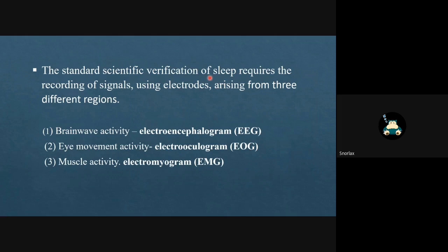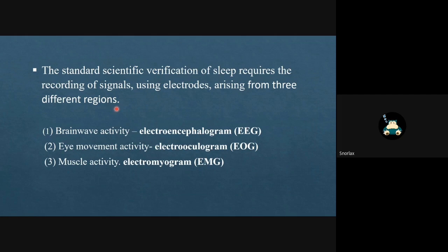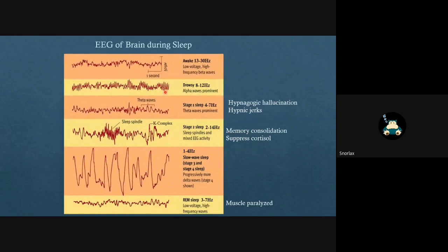The standard scientific verification of sleep requires recording signals using electrodes from three different regions: brain wave activity through electroencephalogram, eye movement through electrooculogram, and muscle activity through electromyogram. This is an EEG of a brain during sleep. As a person remains awake, it is a mixture of alpha and beta waves. Beta waves have a frequency of 13 to 30 Hz and represent arousal and alertness, which is replaced by alpha waves when a person relaxes, having a frequency of 8 to 12 Hz. When a person enters stage 1 of sleep, alpha waves are replaced by theta waves, having a frequency of 4 to 7 Hz. In this stage, a person may experience hypnagogic hallucinations, meaning hearing or seeing something that is actually not present, like someone calling your name or a ringing bell or a flash of light. We also experience hypnic jerks, meaning a feeling of falling.